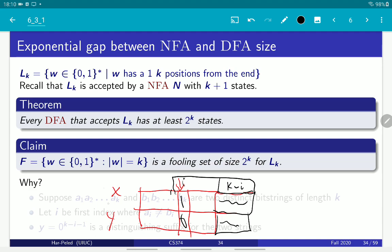And then if you pad, let's assume this is all zeros, it doesn't really matter. So if you add to X and Y this string of zeros, let's call this W. If you concatenate W to both X and Y, in one case they would accept, in another case it wouldn't accept. So as such, those two strings are distinguishable, which means that F is indeed the fooling set with 2 to the k states,